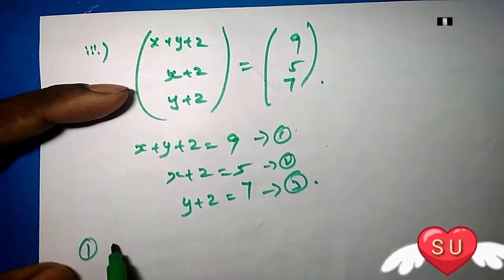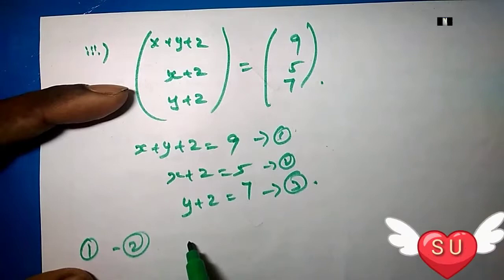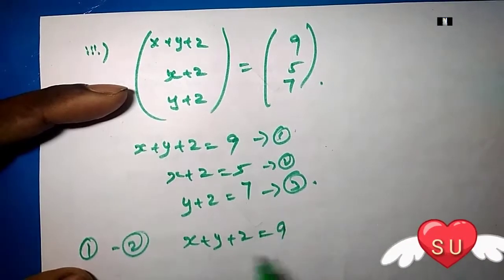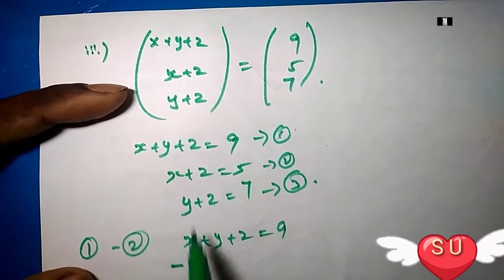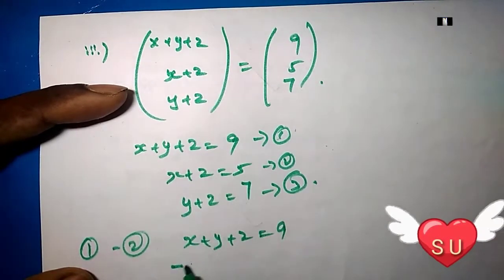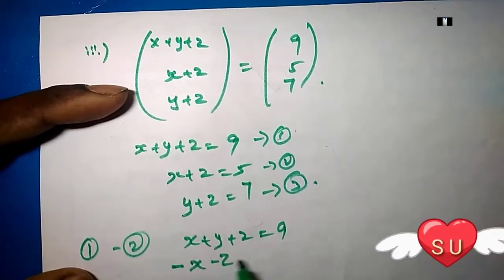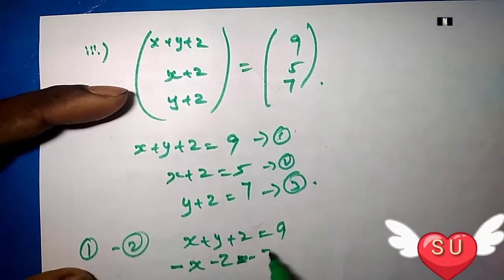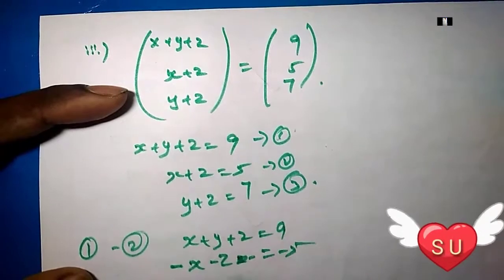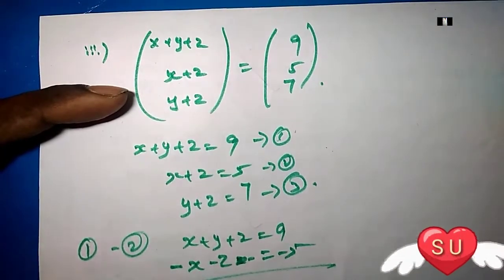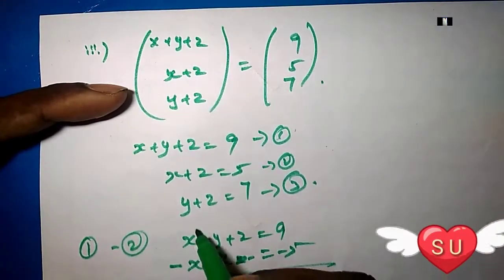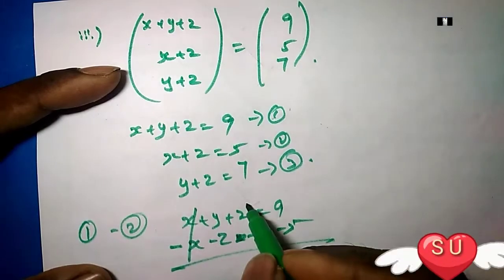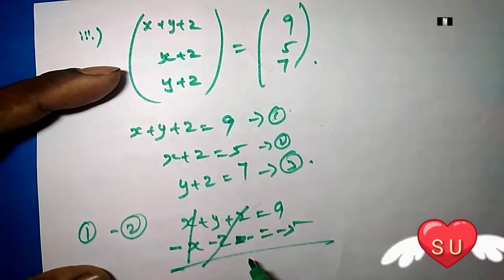To solve, subtract the first equation from the third. So x plus y plus z equals 9, minus x minus z equals negative 5. The x terms and z terms cancel, giving y equals 4.